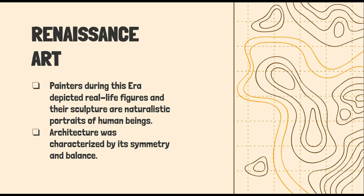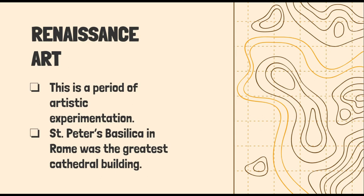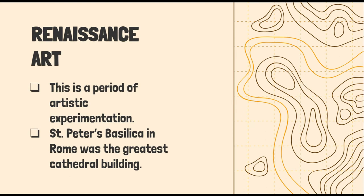Painters during this era depicted real life figures, and their sculptures are naturalistic portraits of human beings. You will see famous artworks like Mona Lisa, The Last Supper, and many more. Architecture was characterized by its symmetry and balance — mathematical forms and figures are really mixed into Renaissance artworks. This is a period of artistic experimentation. St. Peter's Basilica in Rome was the greatest cathedral building, and we know that the Holy Father resides in St. Peter's Basilica.